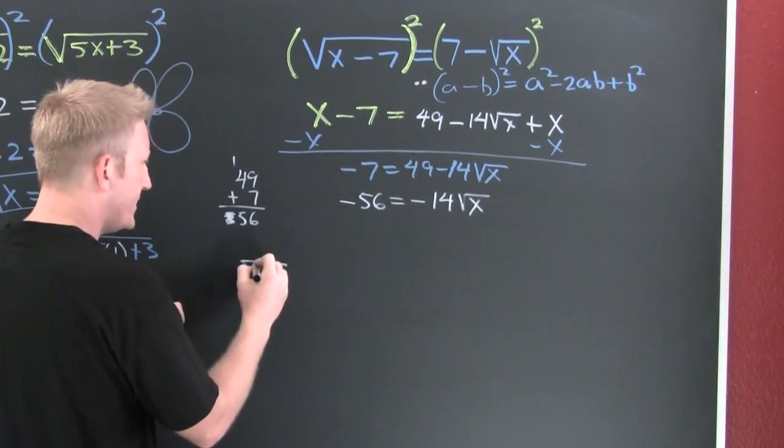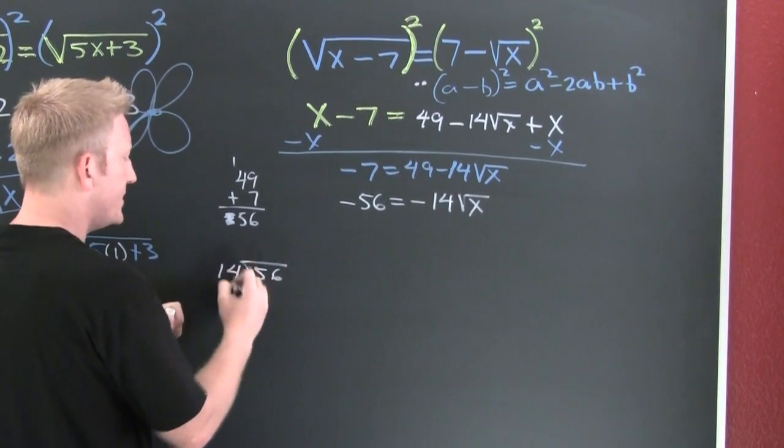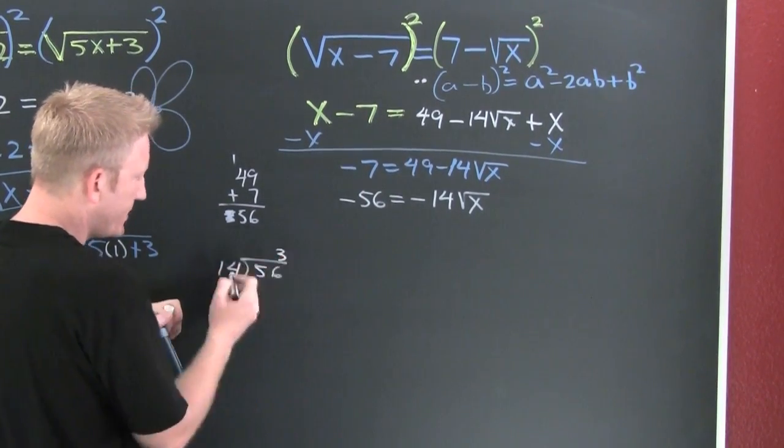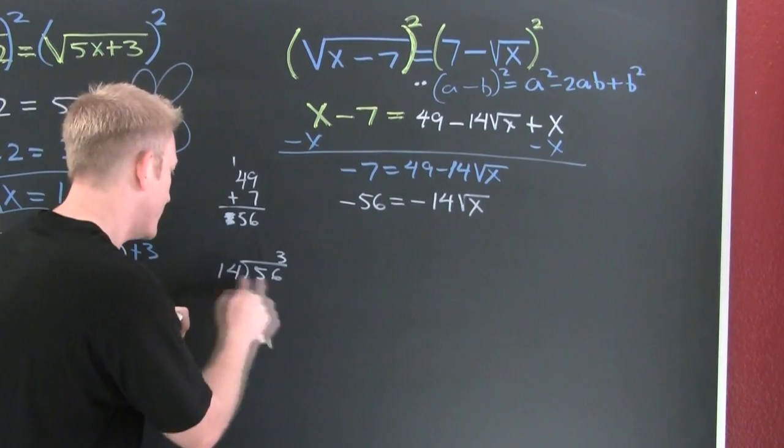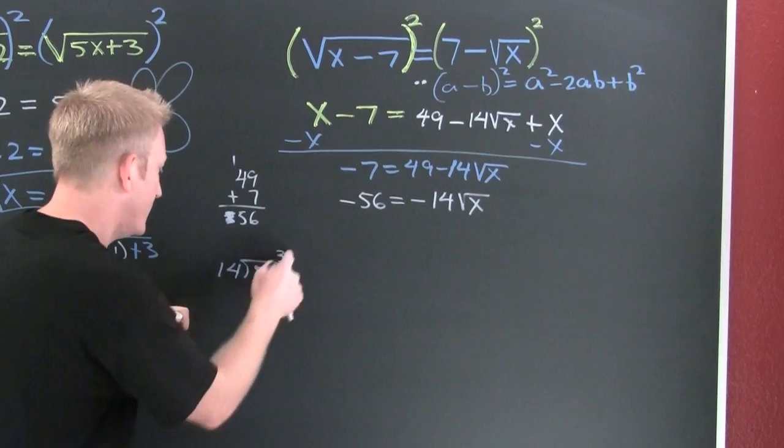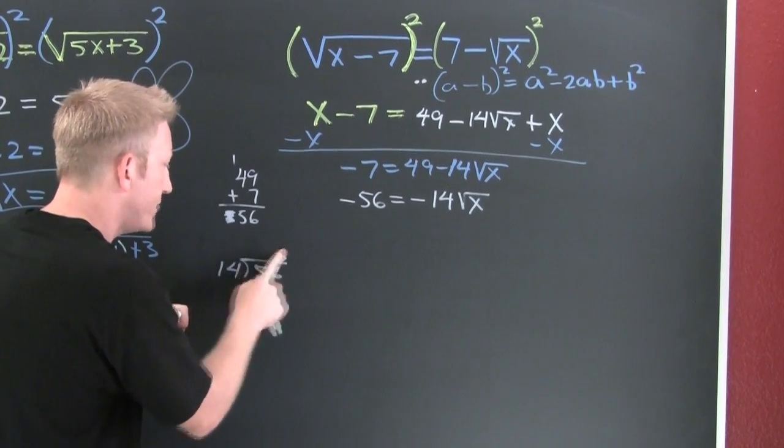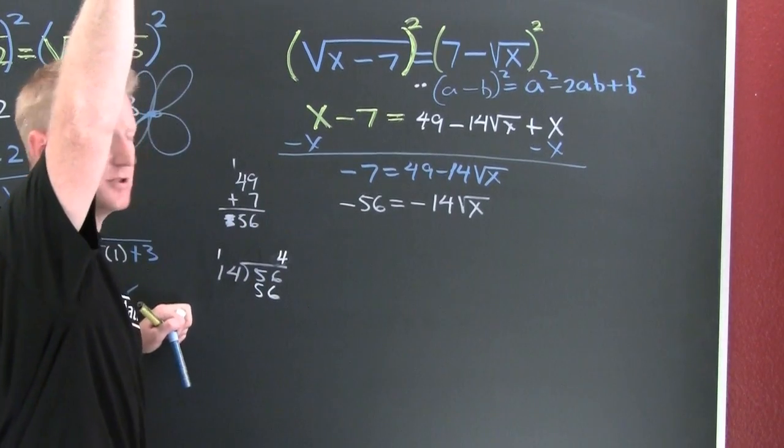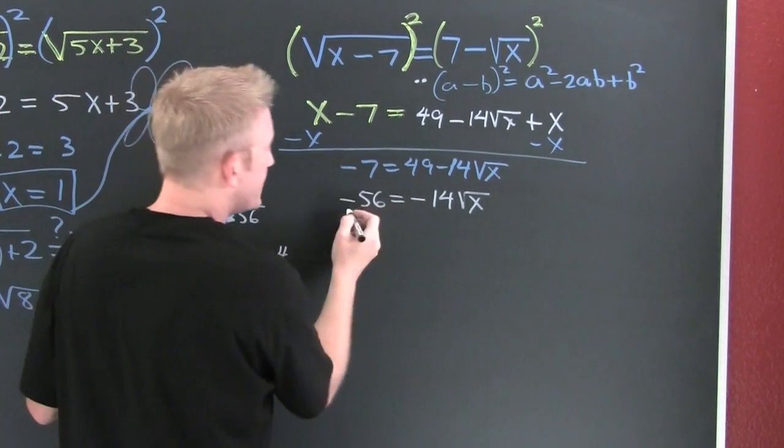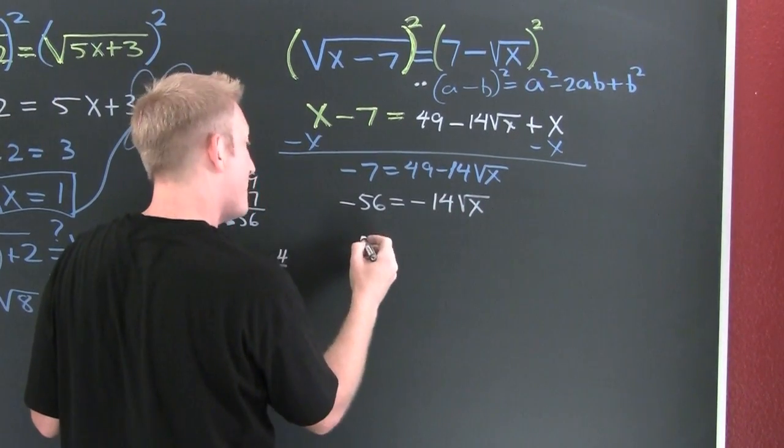Divide 56 by 14, that's 4. When we divide both sides by 14, minus and minus makes plus, so 4 is equal to the square root of x.